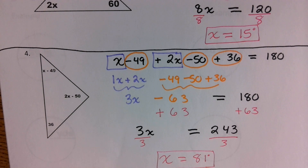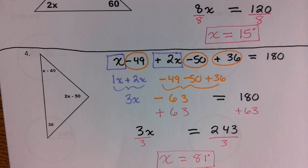Any questions? It's the same process over and over again — you are just solving an equation that you're creating from these triangles. All triangles always equal 180 degrees. It doesn't matter what type of triangle you have; they all equal 180.